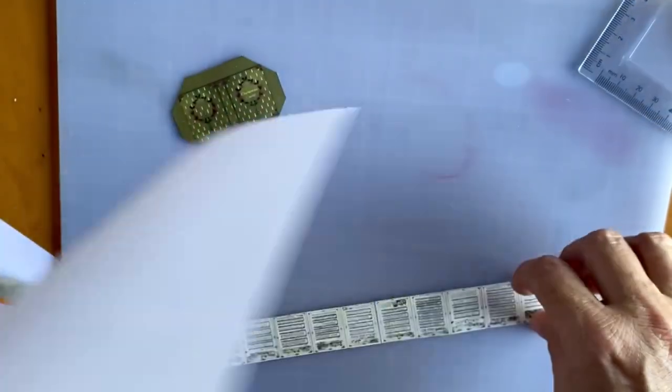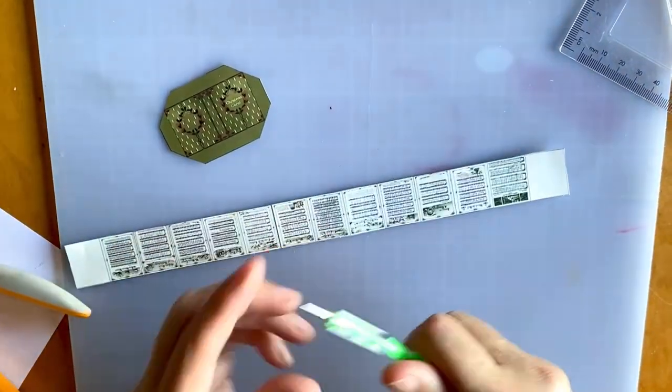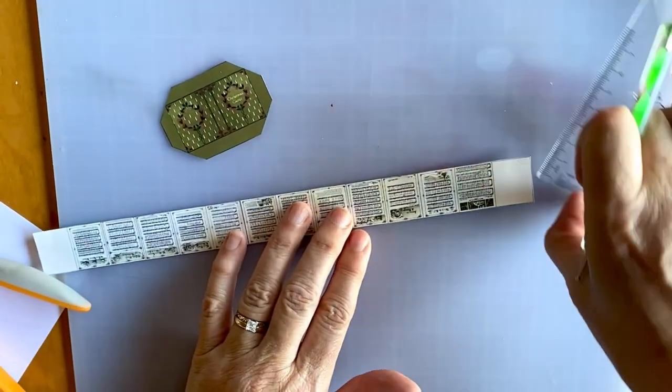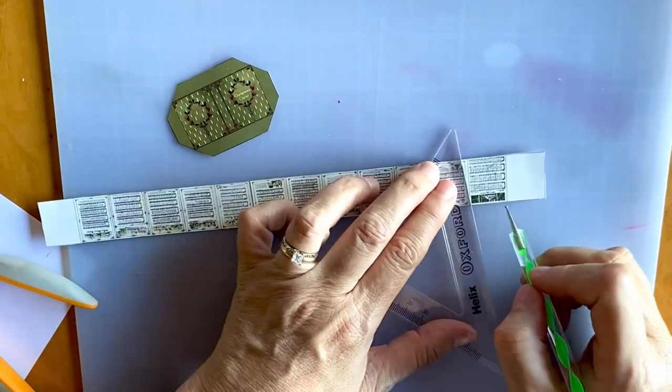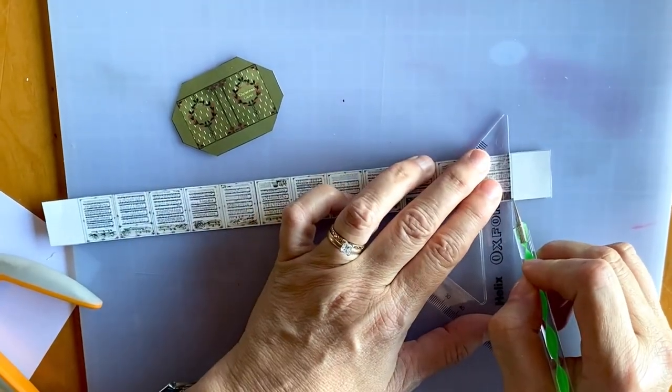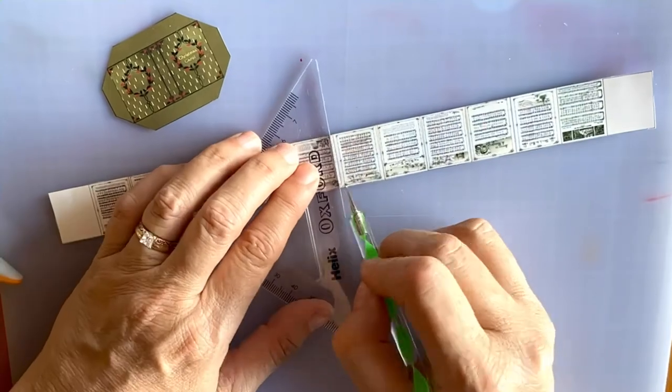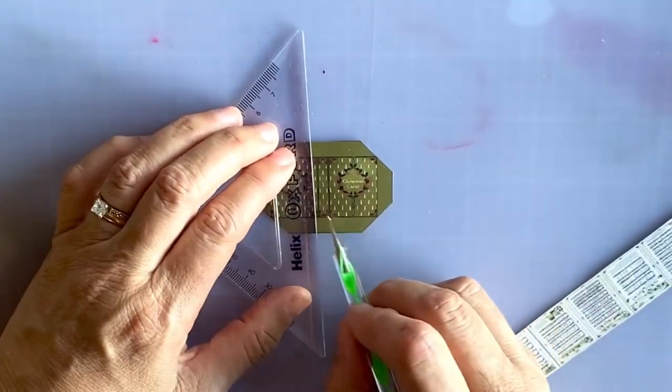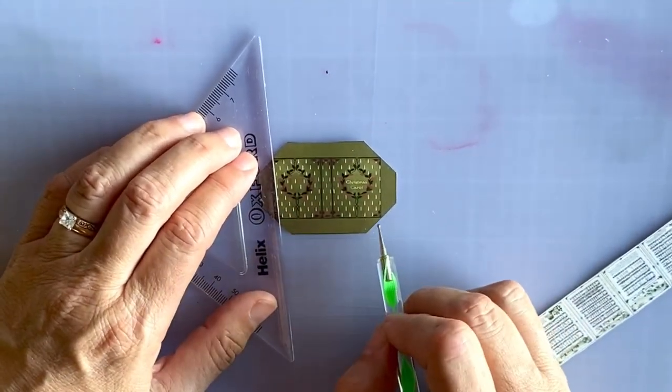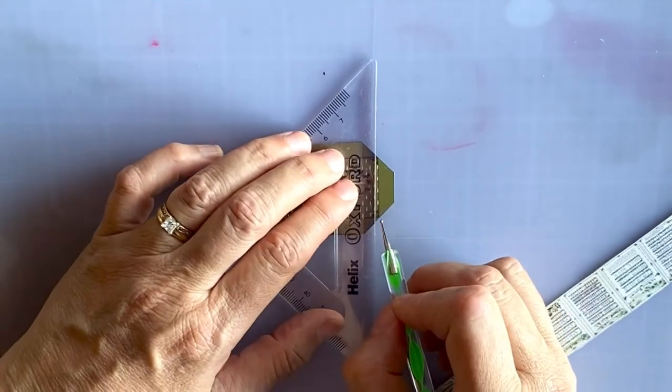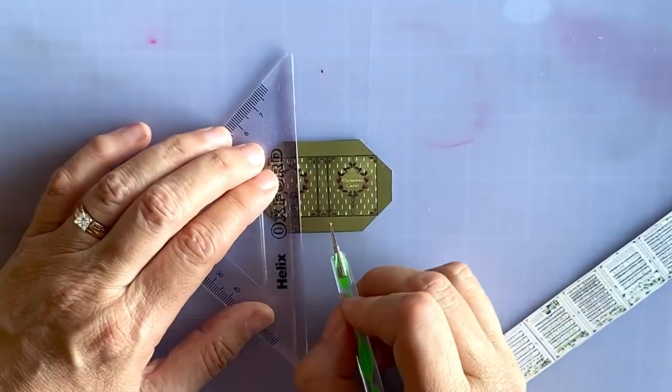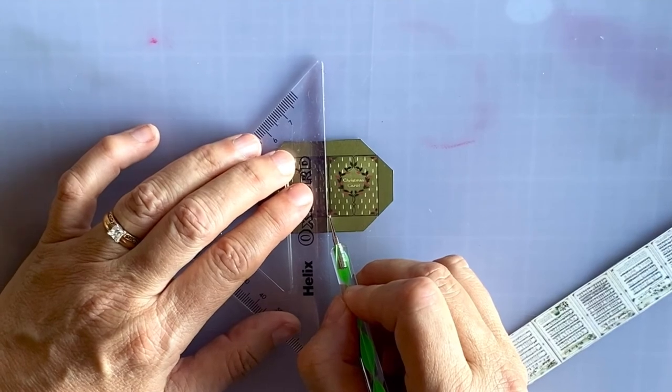Now the next stage is to take our stylus and straight edge and we're just going to score all these little lines. So you also want to score all around the edges of the outside part of the book and the binding as well, because it's going to be folded around.